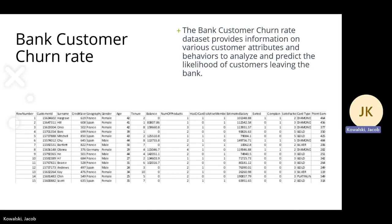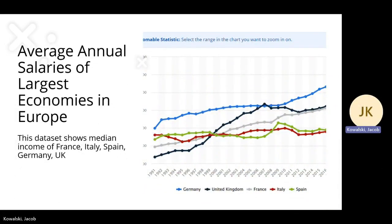The first data set, the bank customer churn rate, provides information on various customer attributes and behaviors to analyze and predict the likelihood of customers leaving the bank. Key attributes include age, tenure, and balance, as well as whether they've exited the bank or have any complaints.